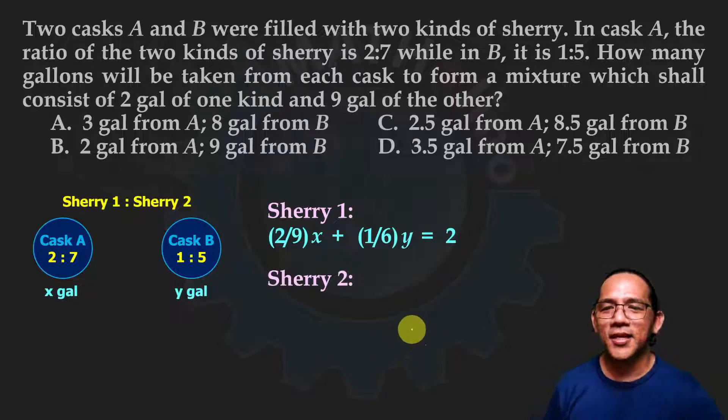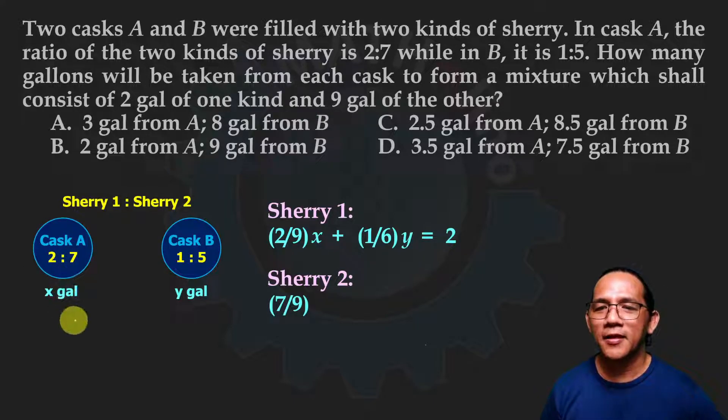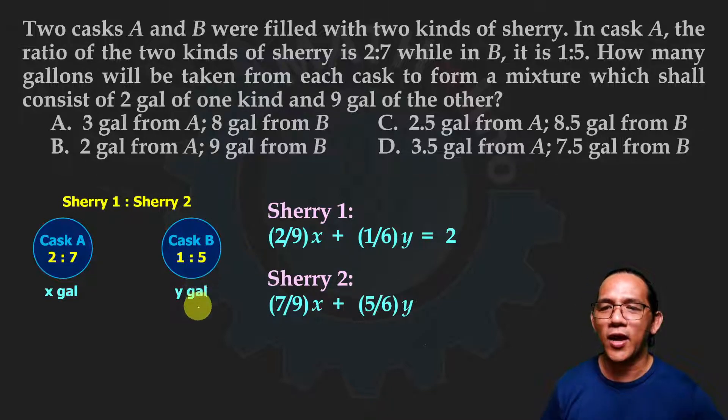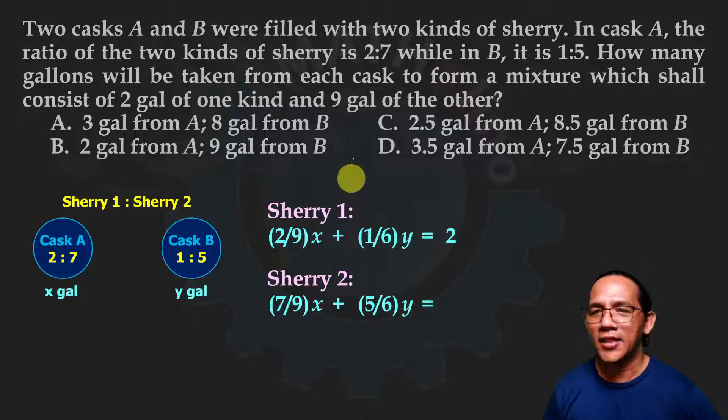For sherry number two, it's seven out of nine times x gallons. From here, five out of six times y gallons. When we combine these, we get nine gallons of the second kind. Equation number one, equation number two.